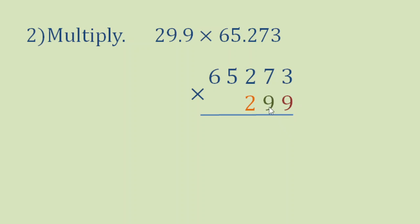So what have you noticed? We put 299 here, and this will be our multiplier, and 65,273 as our multiplicand. So it is the most convenient way when we multiply two numbers. The one with the lesser number of digits will be our multiplier. Now we are simply multiplying two whole numbers because we ignored the decimal points.